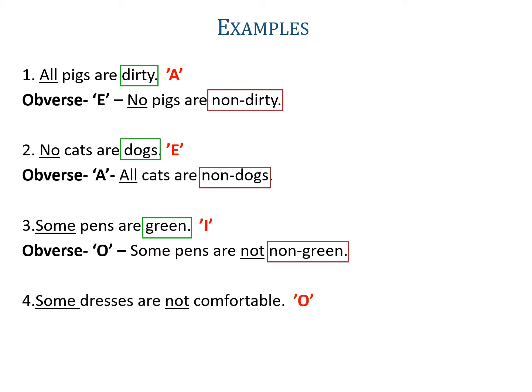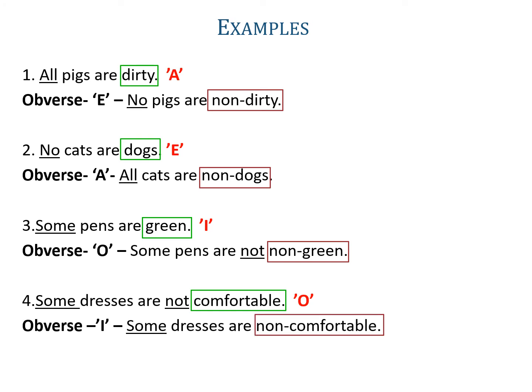Example four: 'Some dresses are not comfortable.' Here some and not is used, so it is an O-proposition, and the obverse of O is I, because both are particular propositions having the same quantity and different quality — O is negative whereas I is affirmative. The predicate is comfortable, its complementary is non-comfortable, and the symbolic form of I is 'some S is non-P'. So the obverse is 'some dresses are non-comfortable'.